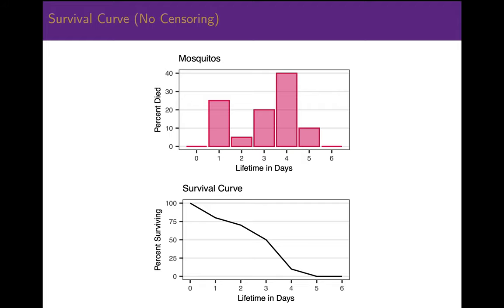This example illustrates how to track survival, but only in cases when there is no censoring. In the setting of a clinical research study, that is unrealistic. Most often, we know the status of the majority of the participants, but other factors make determining the outcome and follow-up time for every participant unlikely. So what is censoring? We will define censoring, and then describe what factors might lead to censored data.